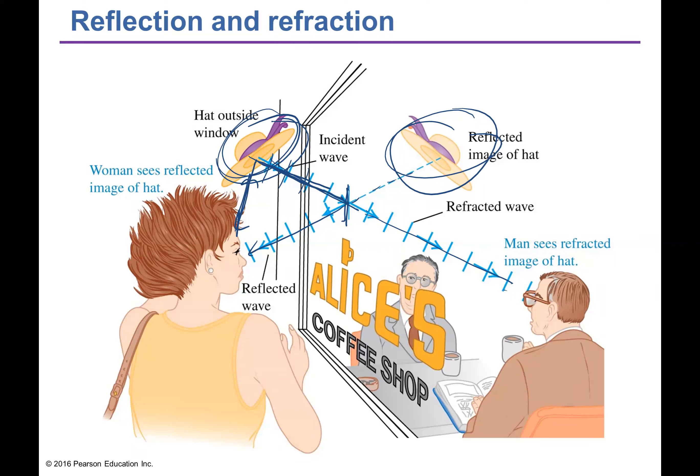To describe all of this, the ray model of light is much simpler. So the next two chapters will use the ray model. In this chapter we'll talk about reflection and refraction, and in the next chapter we'll cover mirrors and lenses.